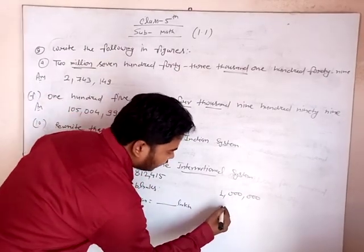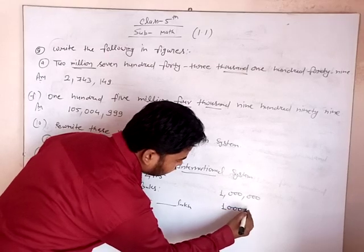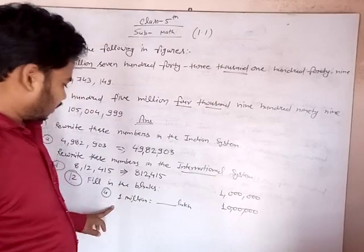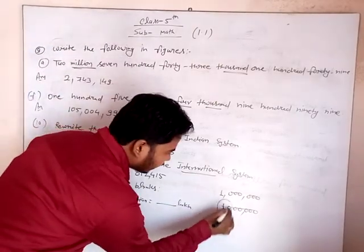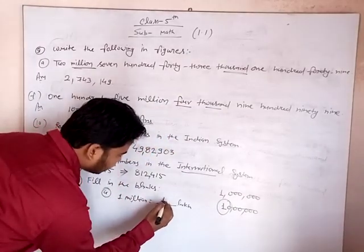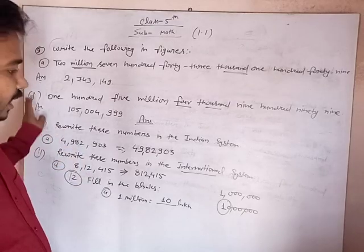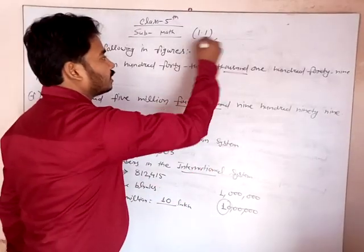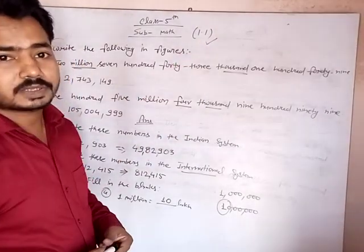International to Indian: one million is equal to ten lakhs. How many lakhs? Ten lakhs. This is your required solution. Dear students, the remaining questions of exercise 1.1 you will solve on your own.